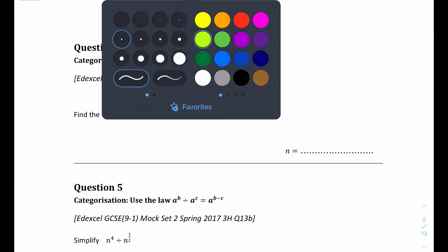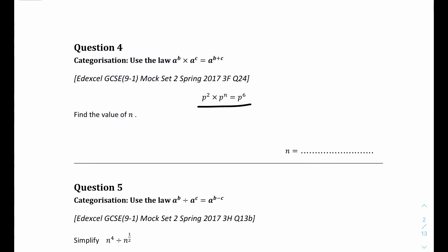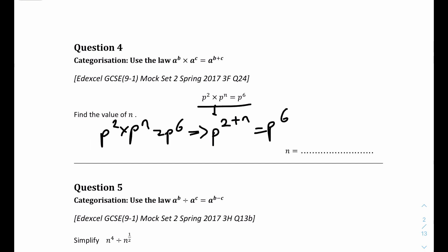Question 4: write down the value of n. We have the equation p squared times p to the n equals p to the 6. In indices, when you multiply, you add the powers. So p to the power of 2 plus n equals p to the 6. Since the base p is the same on both sides, the powers must be equal: 2 plus n equals 6, hence n equals 4.